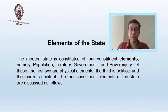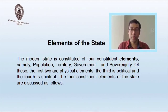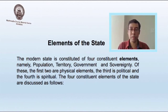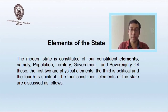We shall now discuss the elements of the state. The modern state is constituted of four constituent elements, namely population, territory, government, and sovereignty. Of these, the first two elements are physical elements, the third one is a political element, and the fourth one is a spiritual element.